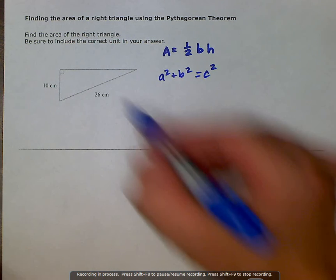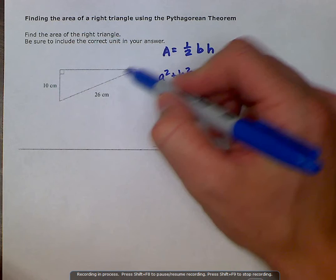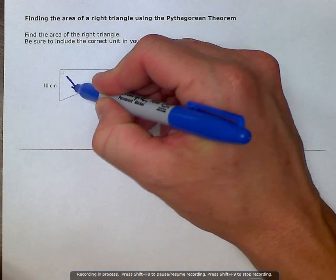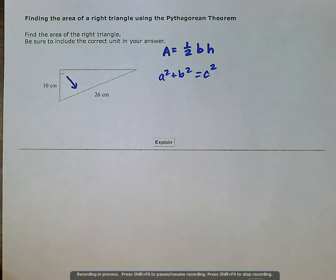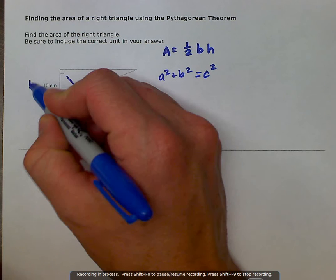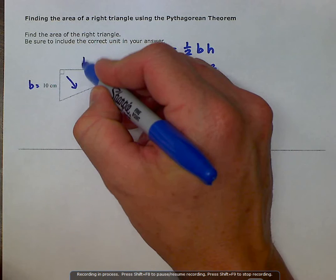where c represents the hypotenuse of the triangle. Now we remember that our hypotenuse is the longest leg that is opposite of the 90-degree angle. So here we have our base, which is equal to 10, and then our height, which is our unknown.